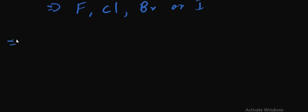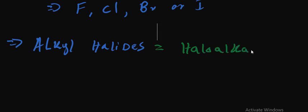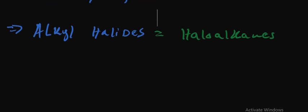Alkyl halides are also known as haloalkanes. So wherever you see the word haloalkanes, you are simply talking about molecules that contain a bond with a Group 7 element.